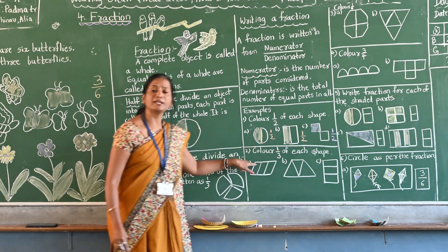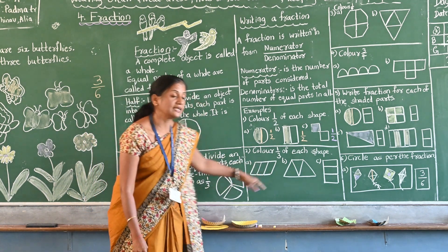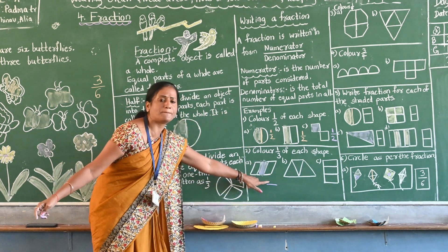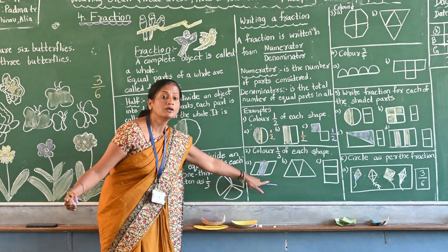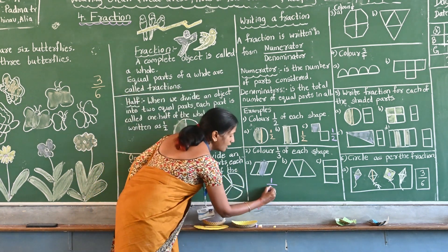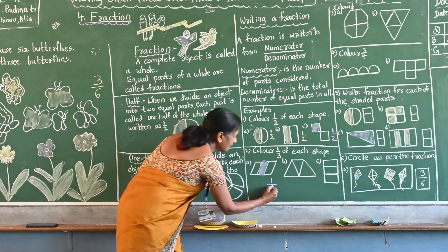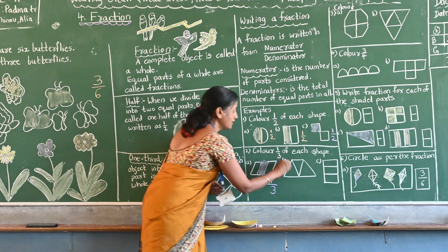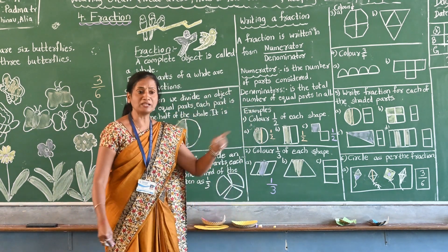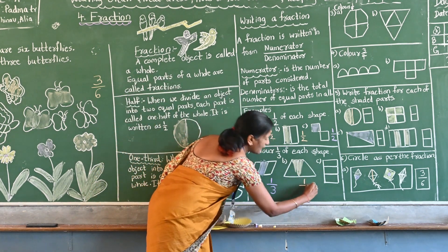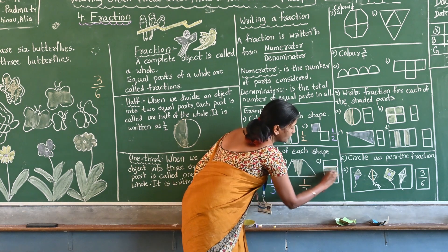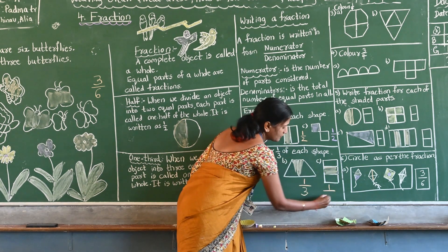How many parts have to color here? One. Total parts? Three. Is that half to color? One — only one part. What do I have to write? The numerator is one. The denominator — how many parts? Three. The numerator is one, the denominator is three. So how many parts have to color? One. Numerator: one. Denominator: three.